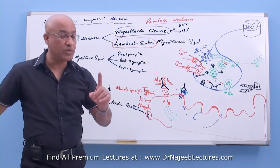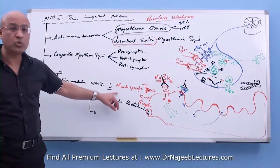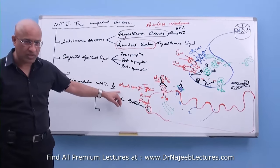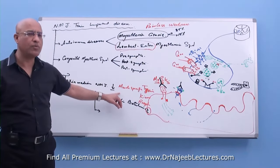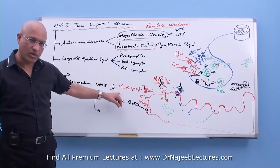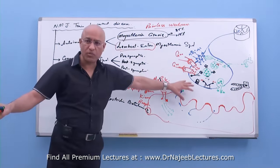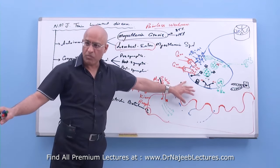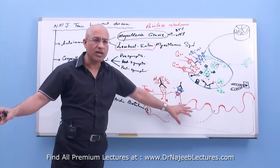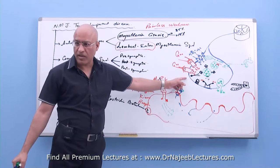Treatment must be done fast in these patients, especially if a higher amount of toxin has been ingested. We will have a full lecture on Clostridium botulinum later. Here I have just explained the mechanism — how it impairs neuromuscular transmission by acting on the pre-synaptic component.